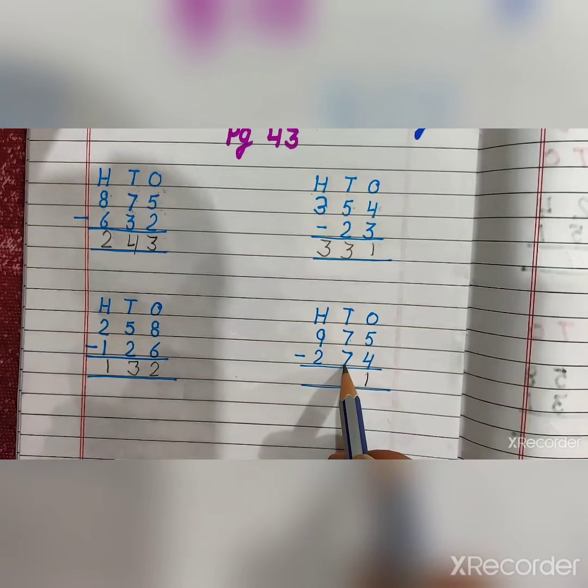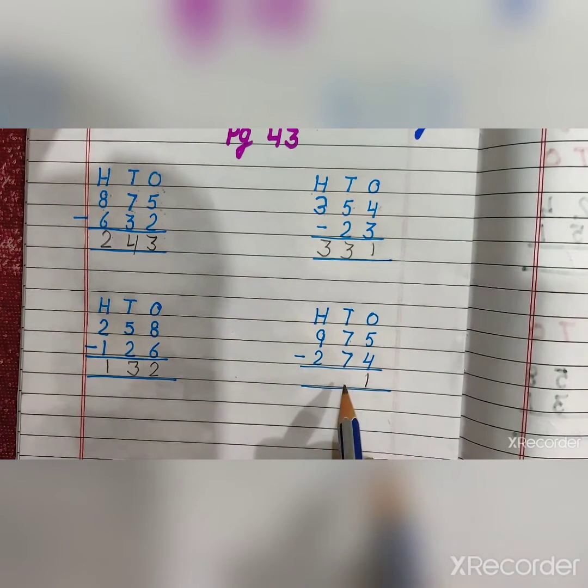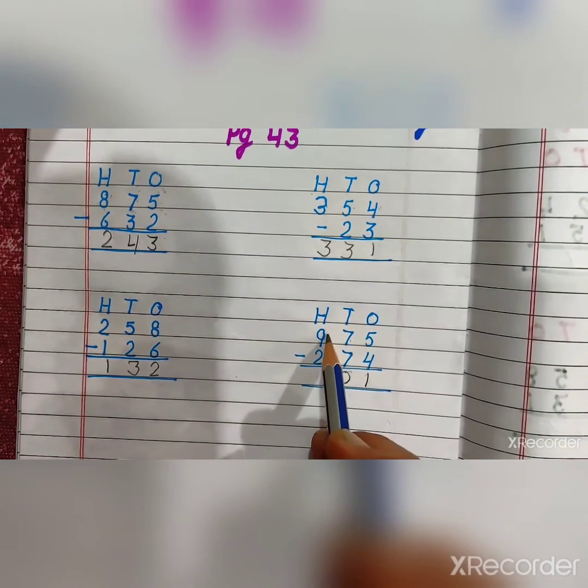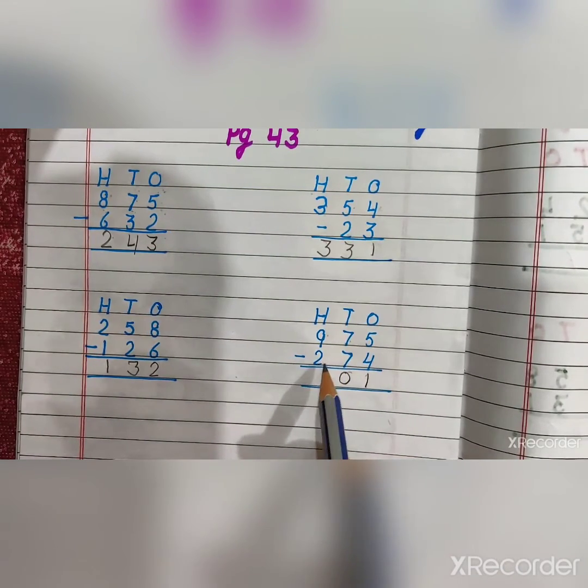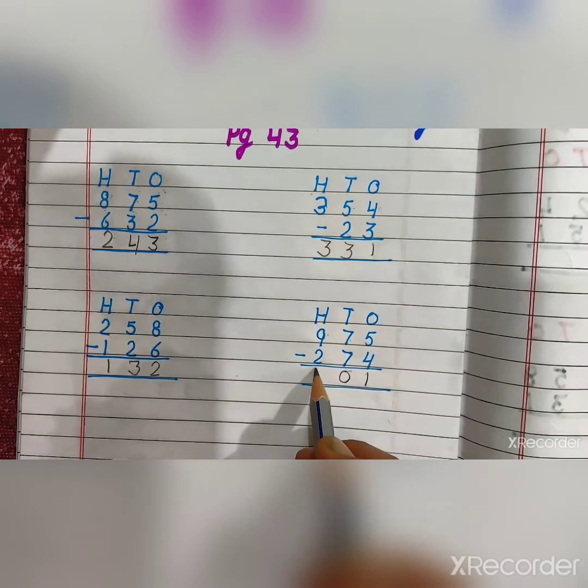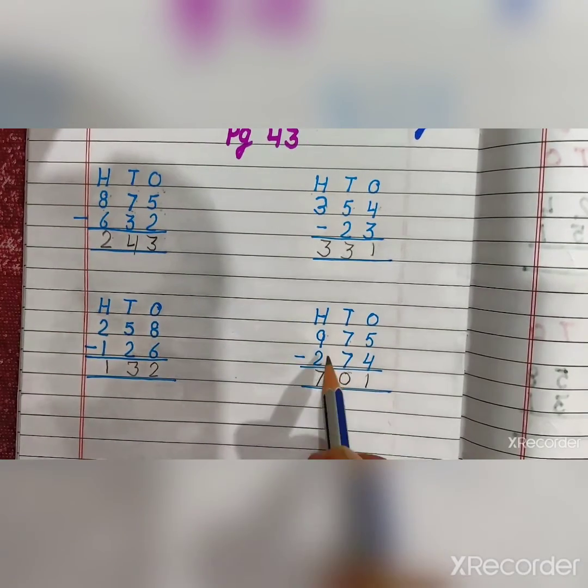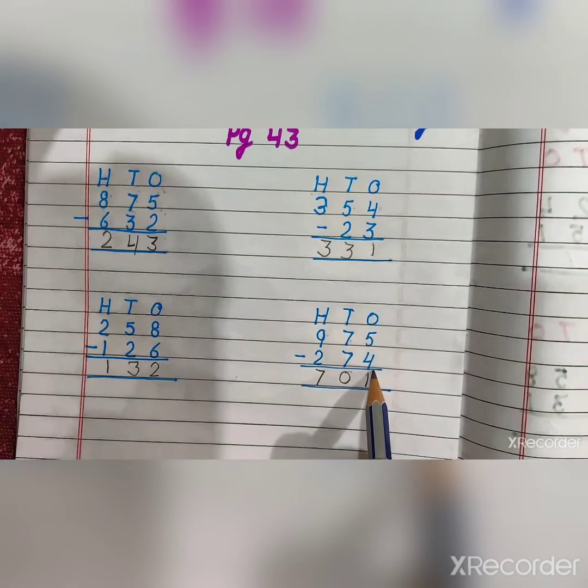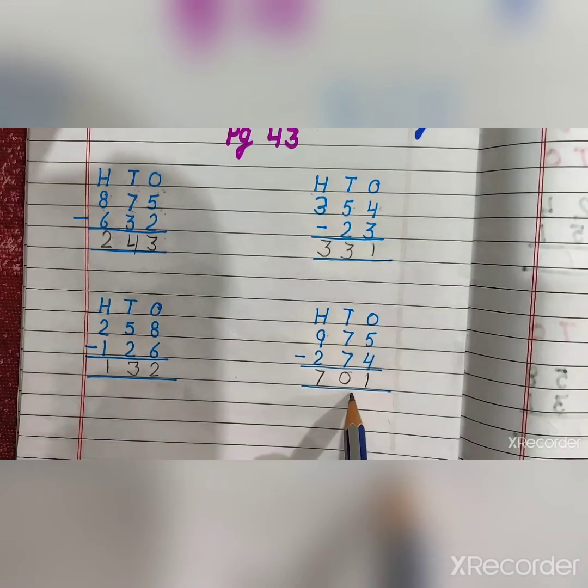7 minus 7 is equal to 0. And next, 9 minus 2 is equal to 7.